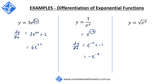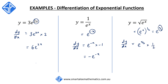Our third example is y is equal to the square root of e to the x. This is the same as e to the x to the power of a half, and using our index law, this is the same as e to the power of x on 2. When we differentiate this, everything stays the same as e to the power of x on 2, but we multiply by the derivative of x on 2, which is a half. So dy/dx will be equal to a half times e to the x on 2, which is the same as a half times the square root of e to the x.